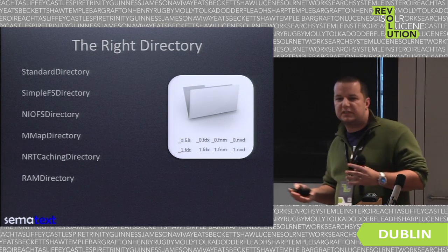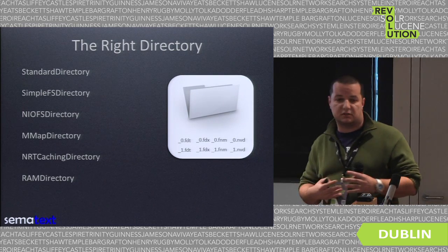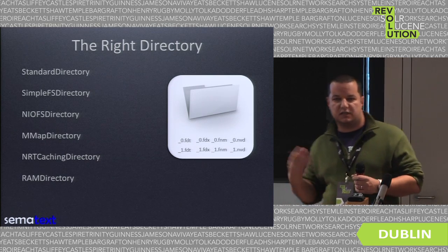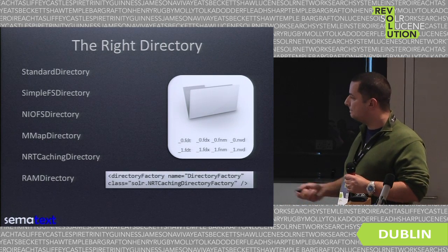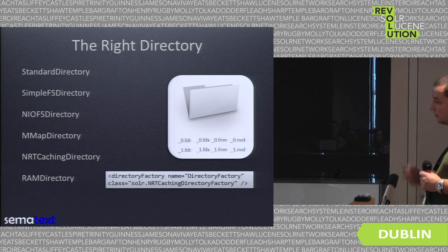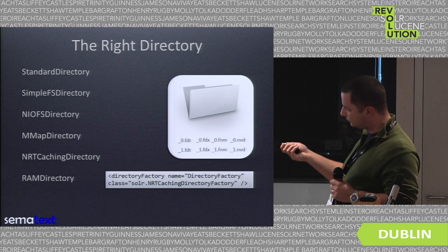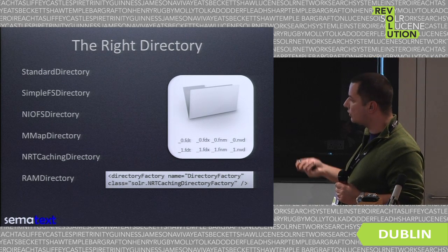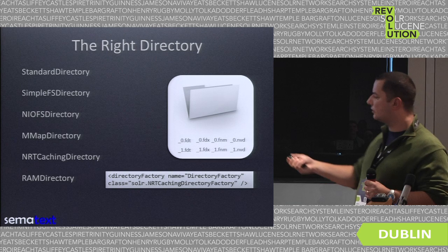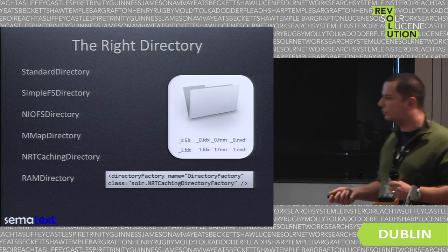Finally, the RAMDirectory is a volatile directory that keeps your index in memory, but it's not suggested for production. However, it can be used for unit testing because it doesn't write files to disk. To configure the directory factory in solrconfig, we need a single entry: the directoryFactory name with the appropriate class for the factory.